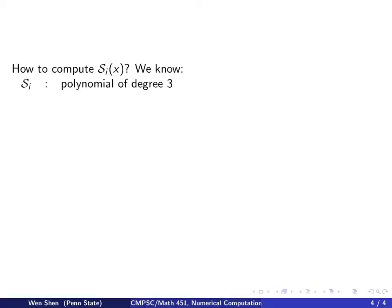So now how do we compute these Si's? We know the following. Each Si is a polynomial of degree 3. Then if I differentiate it once, I lose a degree, and S prime i is a polynomial of degree 2. And if I differentiate it one more time, S double prime of i becomes a polynomial of degree 1.